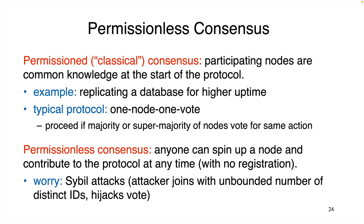By contrast, permissionless consensus is a much more ambitious goal: designing a consensus protocol where anybody can join and start contributing at any time. If I want to be one of the nodes running this protocol, I don't need to be there at the start, don't need to register with anybody, don't need anyone's permission. Literally, I should be able to just download some software, fire up a node, and start contributing to the protocol. None of the classic consensus protocols from the 1980s solved permissionless consensus — no one was even trying to, since they had no reason to. They were focused on things like replicating databases, which are most naturally modeled in the permissioned setting.